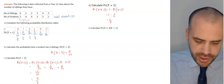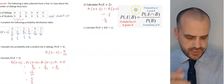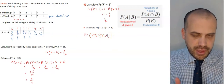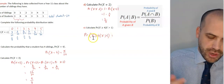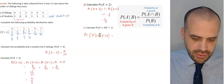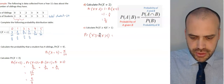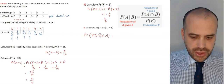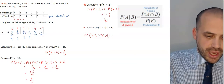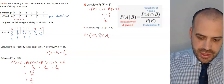Now for a conditional probability question: P(X ≥ 4 | X > 1). We use the formula: P(A|B) = P(A and B) / P(B). We need values that satisfy both X ≥ 4 and X > 1. Checking each value: 0, 1, 2, and 3 don't qualify. Only 4 and 5 satisfy both conditions. So the probability of A and B is the probability of 4 plus the probability of 5, which is 5 in 24 plus 1 in 24 equals 6 in 24.